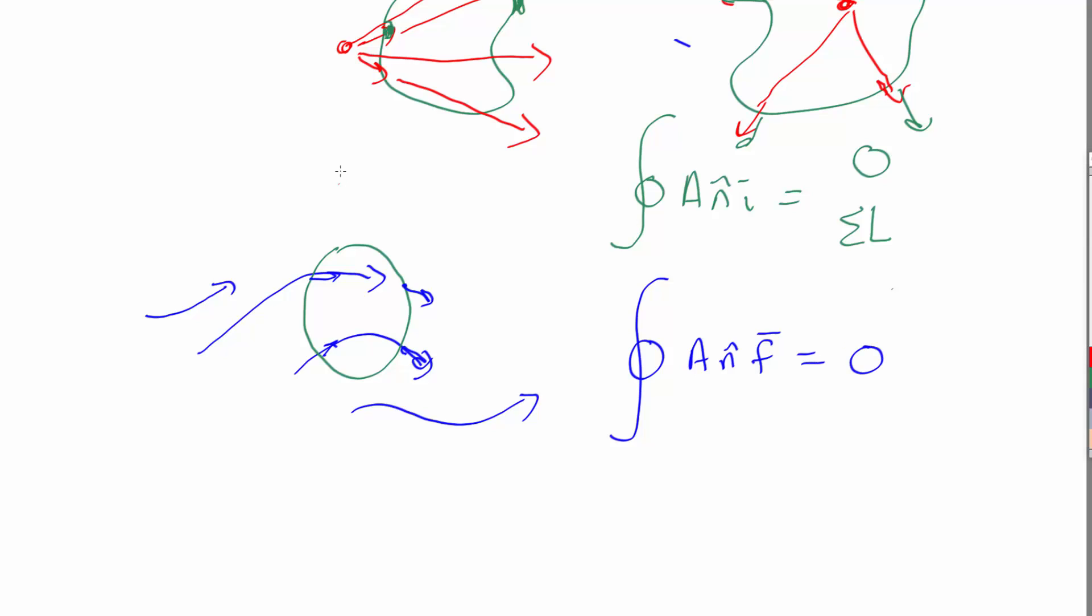Unless, again, you had, I don't know, something, a pipe going in here with a nozzle at the end squirting water out. In which case, well, even then, actually, it would still come to zero because you've got to account for the very large flow of water down the pipe. This, it turns out, is one of the fundamental equations of fluid dynamics.